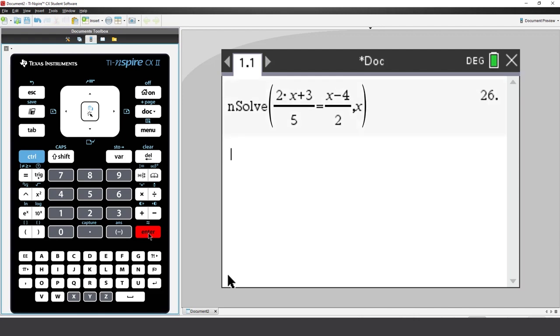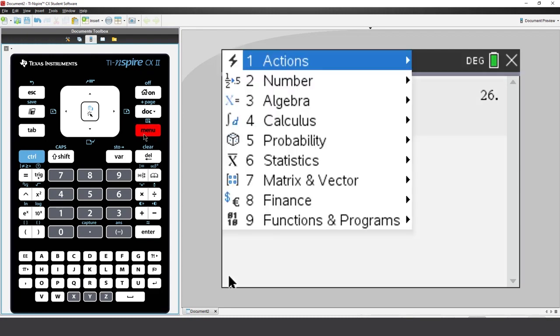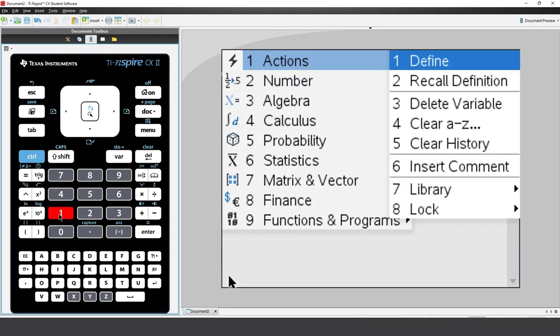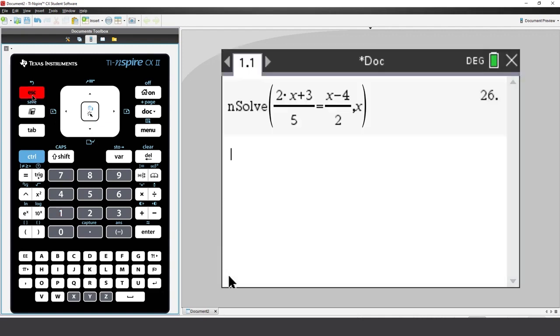Now, let's try a different type of equation. I'll define g of x equal to x squared. I could use a menu and navigate to Define, or use the assigned equals key by pressing Control followed by the Math template.